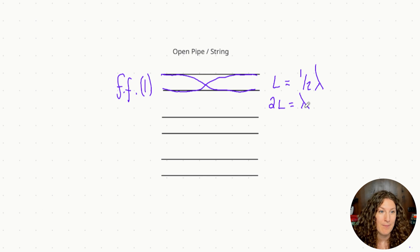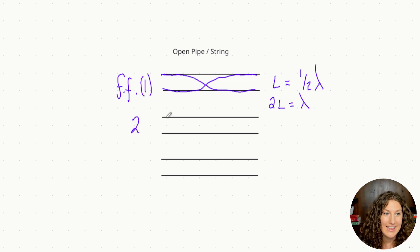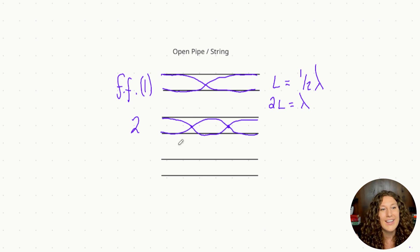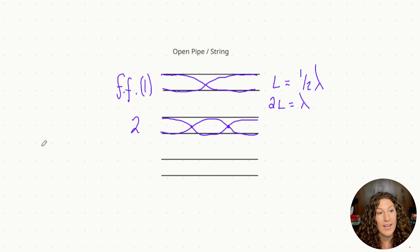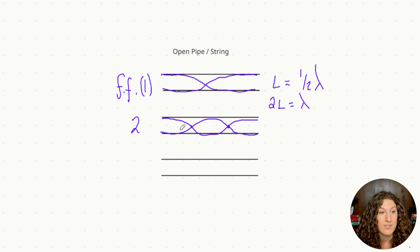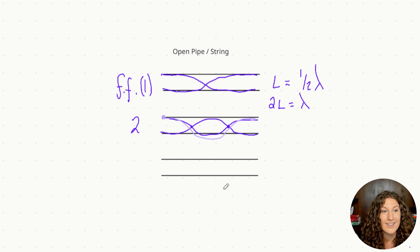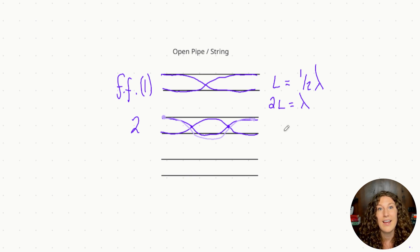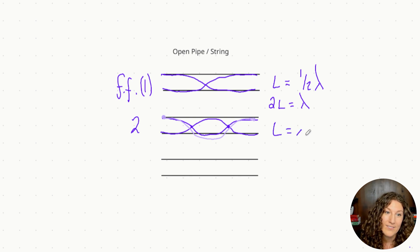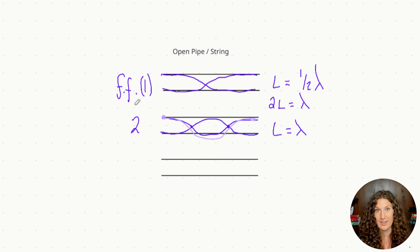Now let's go to the second harmonic in a pipe. In the second harmonic we're increasing our frequency, so it looks like this — we now have two nodes. Following the wave shape to see how many wavelengths we have: we go crest, down, up, crest — that is one wavelength in this pipe. So the second harmonic in an open pipe or string is going to be length equals wavelength, meaning whatever the length of the tube is equals one wavelength.